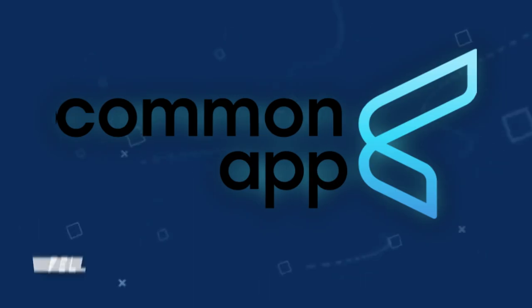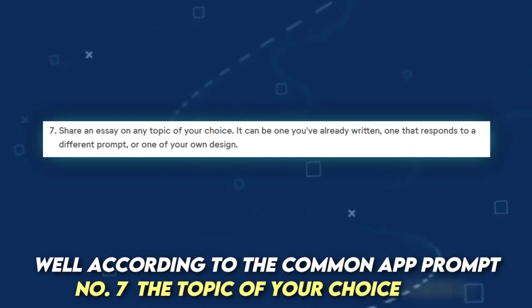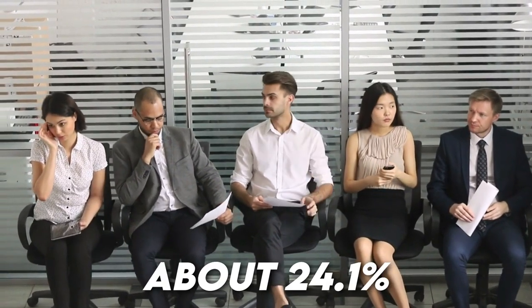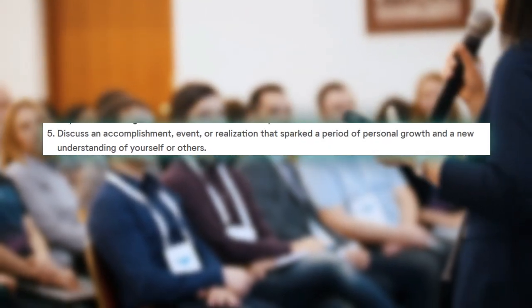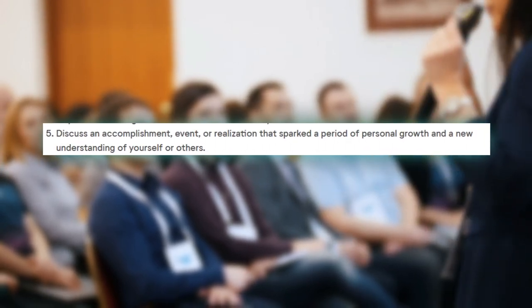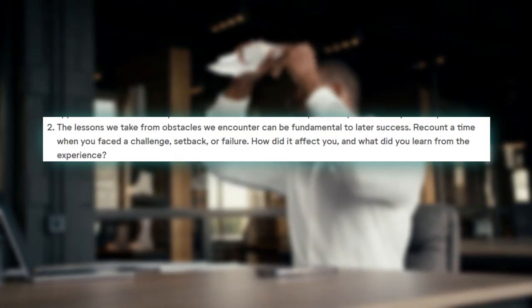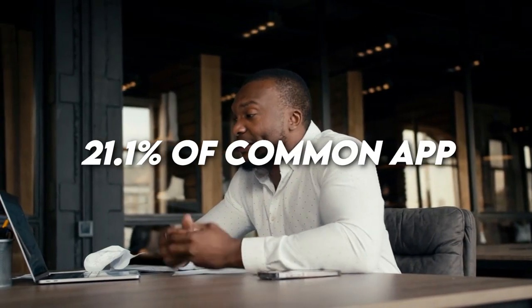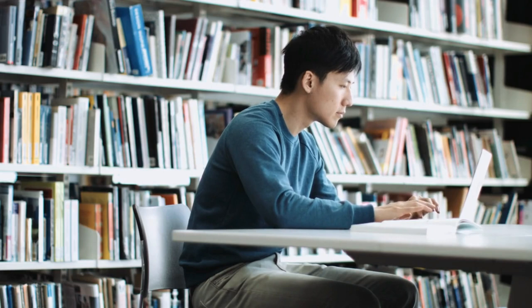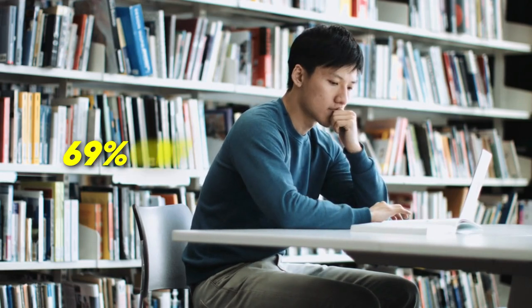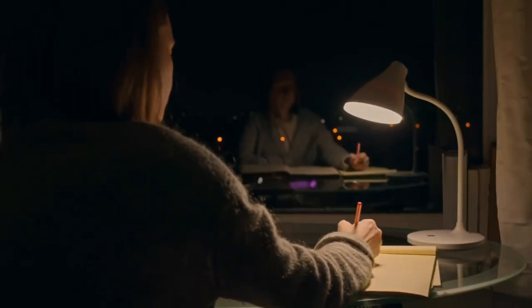Now that we've covered all the prompts, you may be wondering which prompts students write about most. According to Common App data, prompt seven — the topic of your choice — ranked first with about 24.1% of applicants. Prompt five — the accomplishment/event/realization essay — came in second with 23.7%, and prompt two — the challenge/setback/failure essay — came in third with 21.1% of applicants. Together, these three prompts made up nearly 69% of college essays. If you want to potentially stand out more, it might be worth approaching the lesser-used prompts, which could make your writing more memorable. Of course, if you feel you can convey something better with the more popular prompts, feel free to do so.